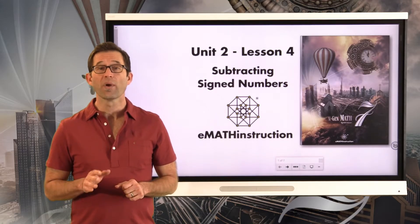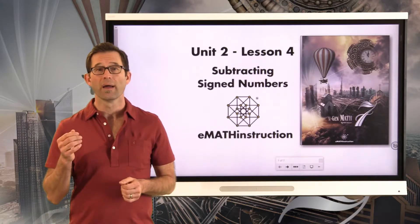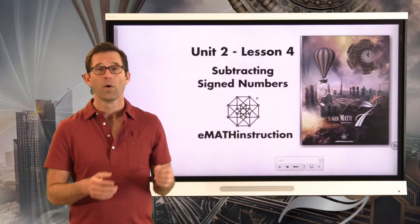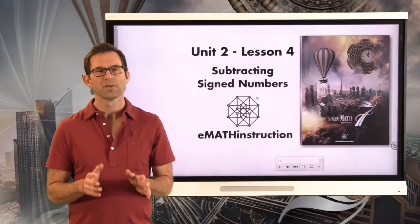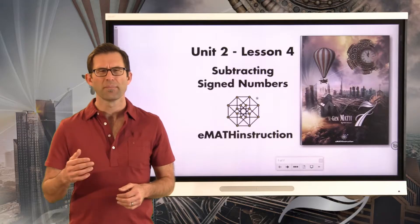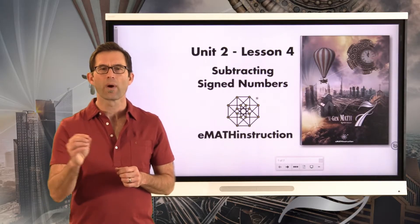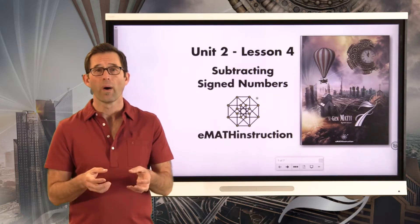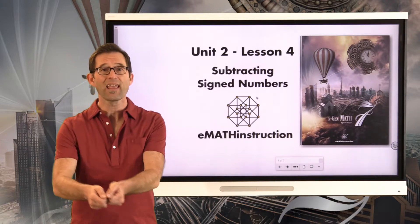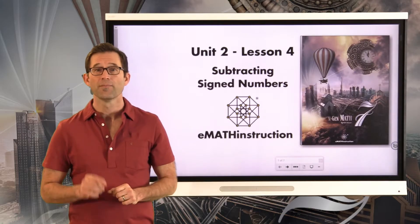In the last few lessons we've worked with adding signed numbers, looking at it from the perspective of zero-sum pairs — when positives combine with negatives, they cancel each other out to give us zeros, and we end up with some kind of net negative or net positive. But subtraction is more difficult, especially when we start to subtract larger positives from smaller positives, or subtract negatives from positives. Never forget that subtraction ultimately means taking something away from something that's there.